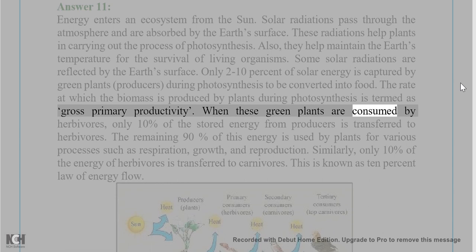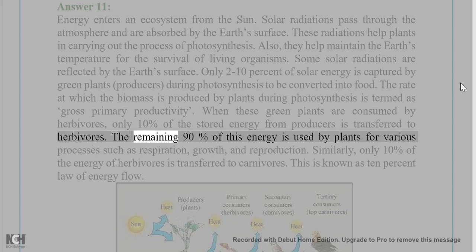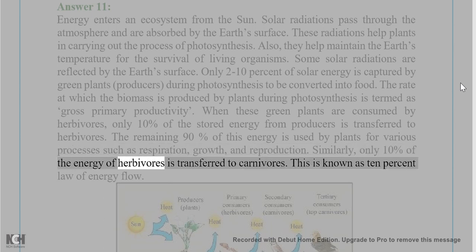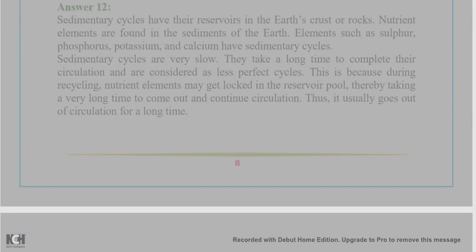The rate at which biomass is produced by plants during photosynthesis is termed gross primary productivity. When green plants are consumed by herbivores, only ten percent of the stored energy from producers is transferred to herbivores; the remaining 90% is used by plants for respiration, growth, and reproduction. Similarly, only ten percent of the energy of herbivores is transferred to carnivores. This is known as the ten percent law of energy flow.